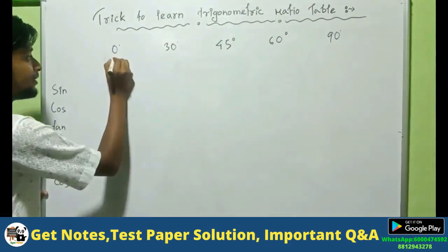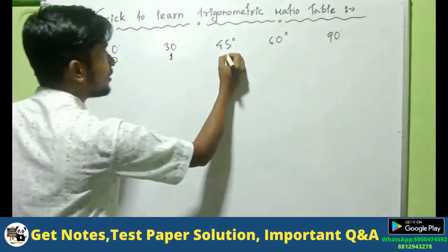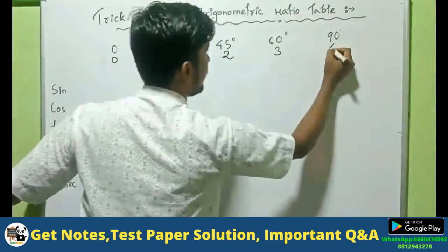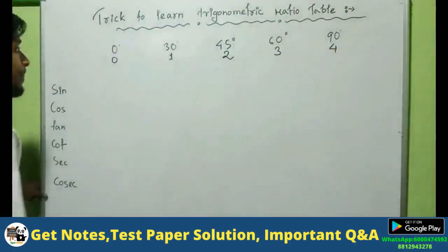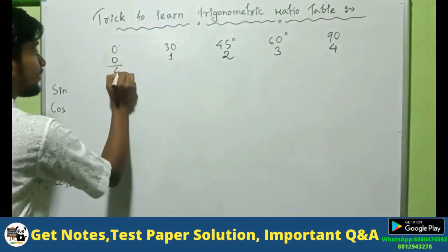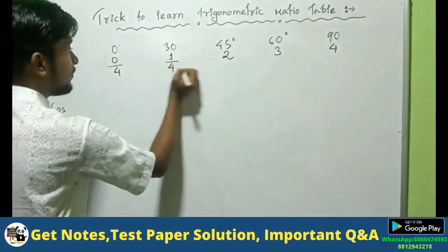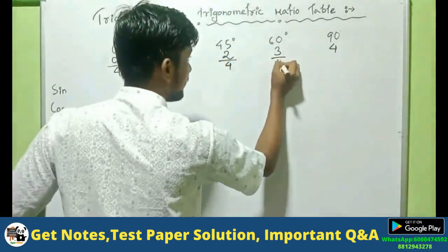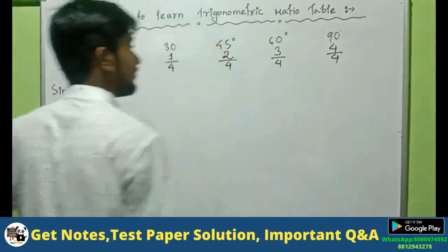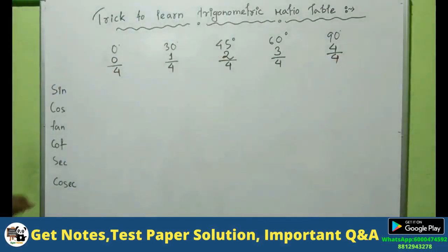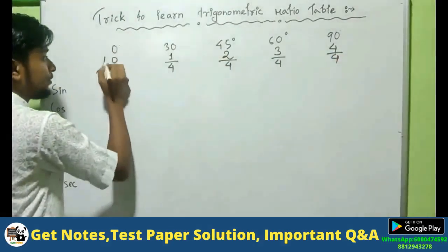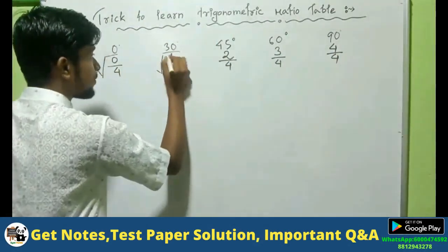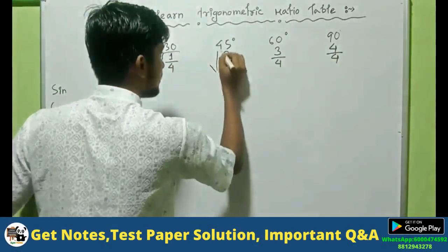Give here 0, 1, 2, 3, 4. Now divide all these numbers by 4 — divide by 4, by 4, by 4, and here also by 4. Now take the square root of these numbers.